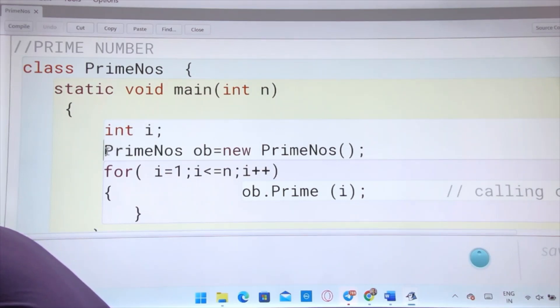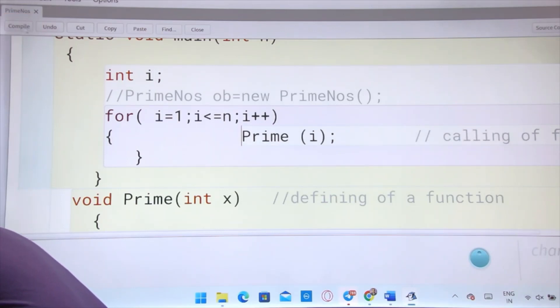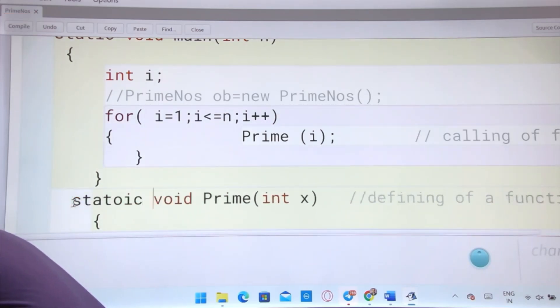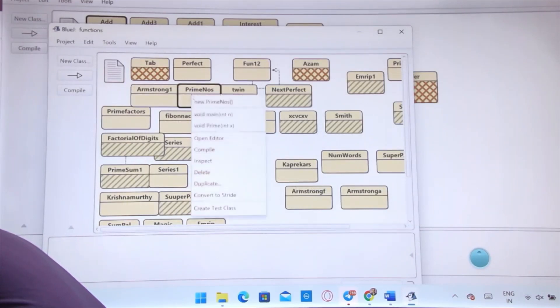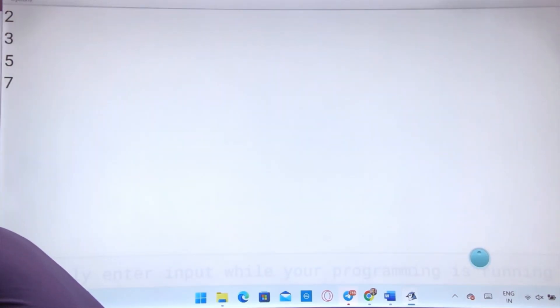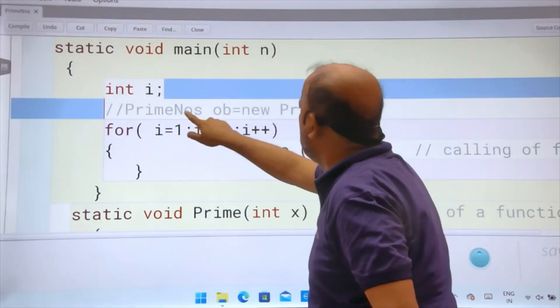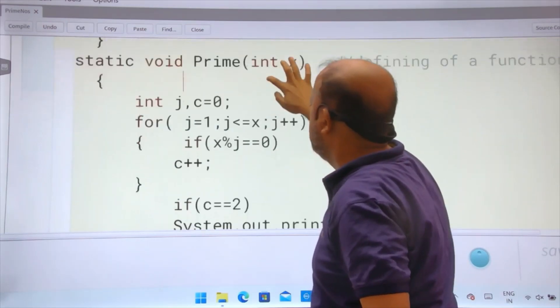Suppose this line I am removing - no object. You call it ob dot prime i. You have some error. Now you do here static, s-t-a-t-i-c, and now no changes. Now see, it is fine again. It will work. You can directly call, static is there so you can directly call main here. Suppose again I have given 10, again 2, 3, 5, 7. What I wanted to explain: static void main, then this object compulsory is not needed. Prime i called, static void prime i.